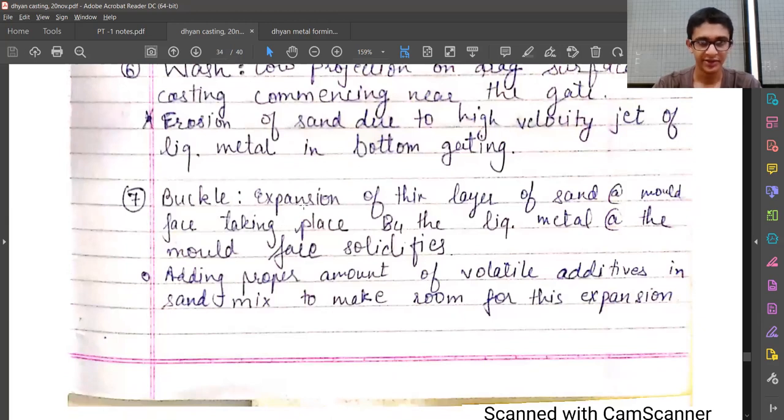Seventh is buckle, which means expansion of thin layer of sand at mold face taking place before the liquid metal is poured at the mold face solidifies. Simple buckling—if we have a column and put a lot of pressure on it, the column will buckle. In the same way, if we have a layer of sand and put a lot of pressure without enough support, it will buckle. It can be solved by adding proper amount of volatile additives in sand mixture to make room for this expansion.